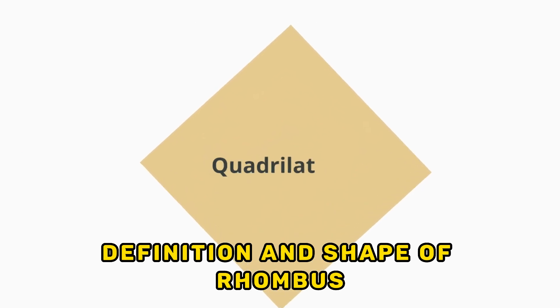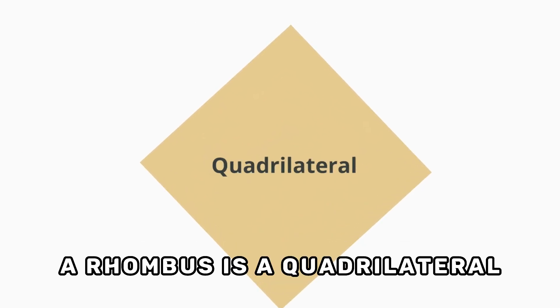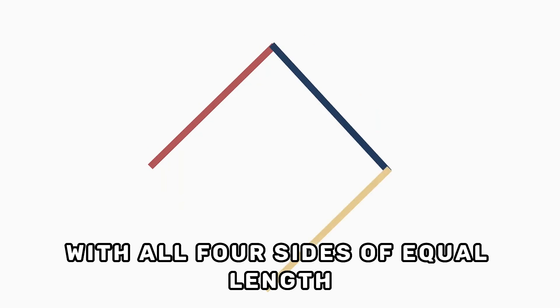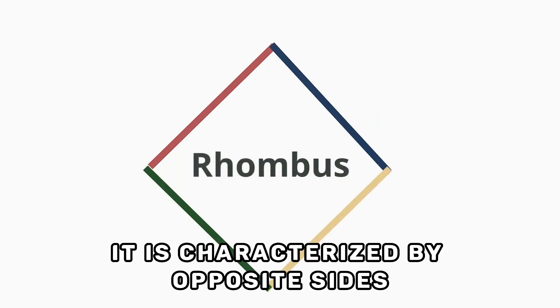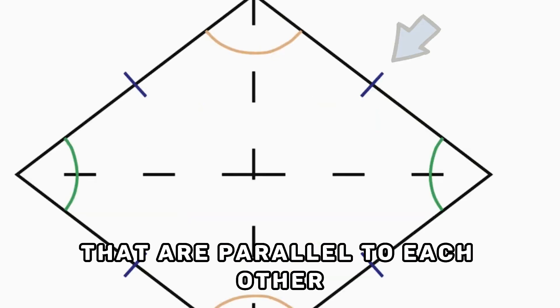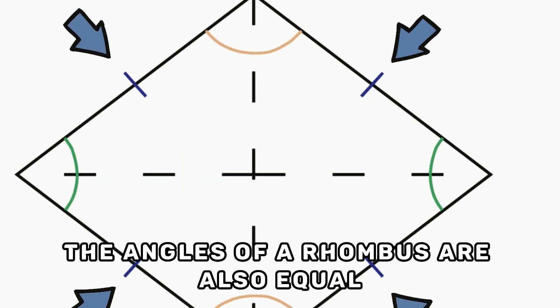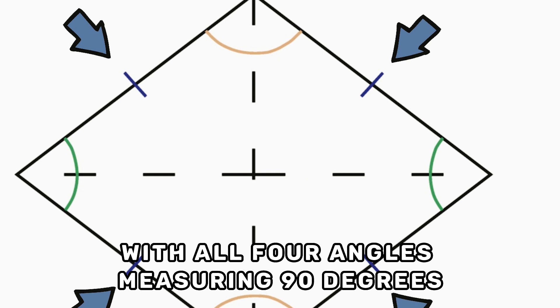Definition and shape of rhombus: A rhombus is a quadrilateral with all four sides of equal length. It is characterized by opposite sides that are parallel to each other. The angles of a rhombus are also equal, with all four angles measuring 90 degrees.